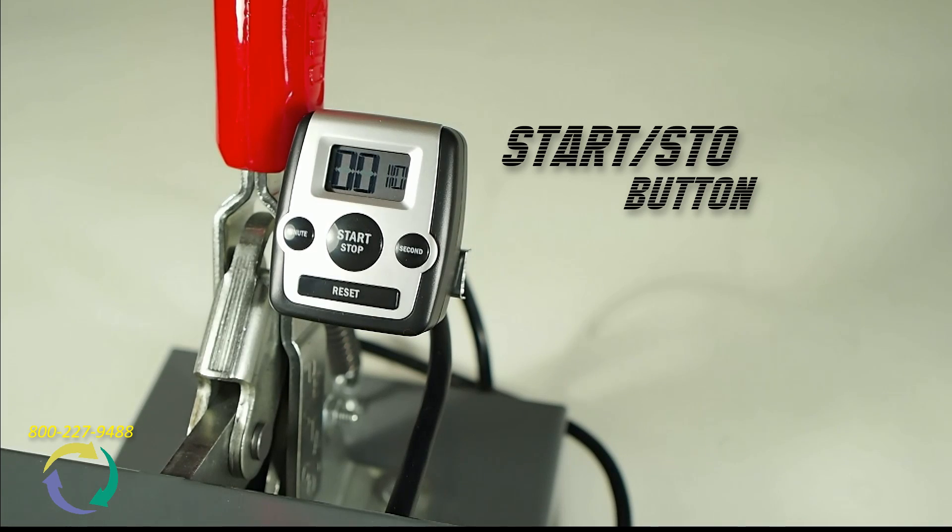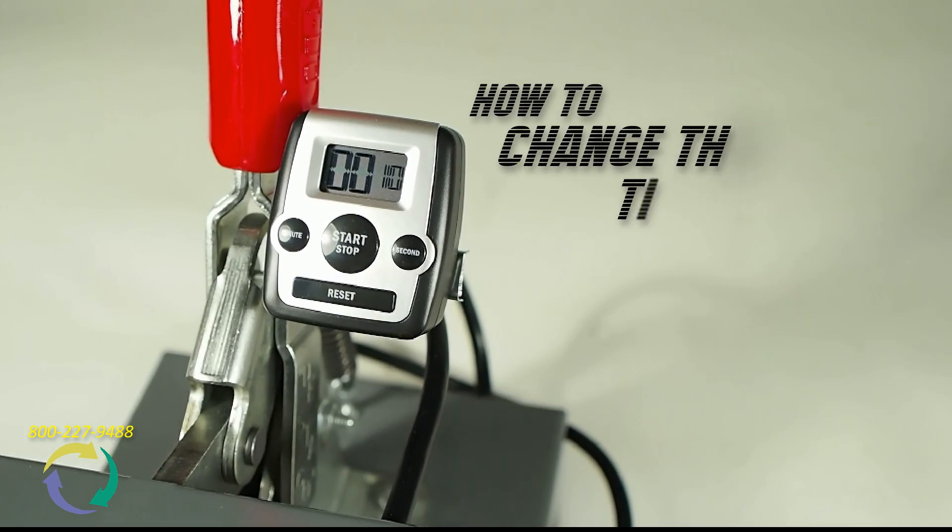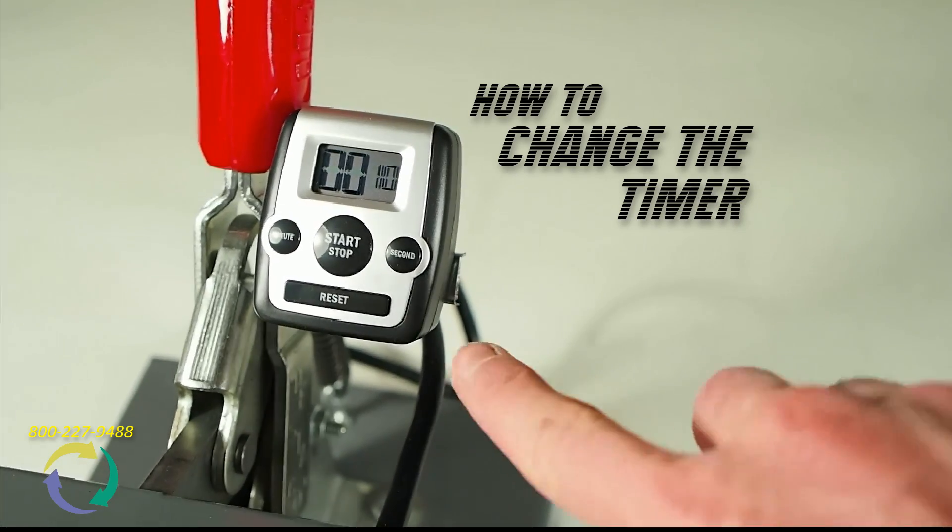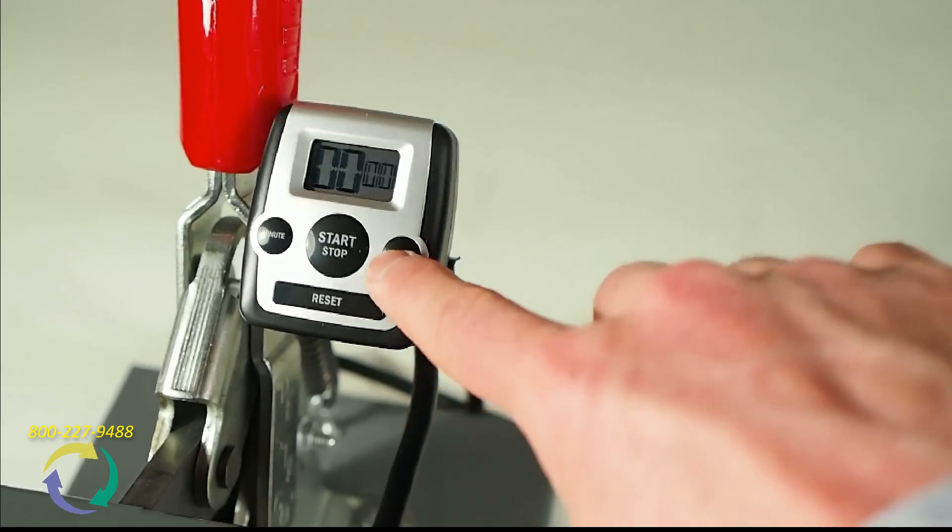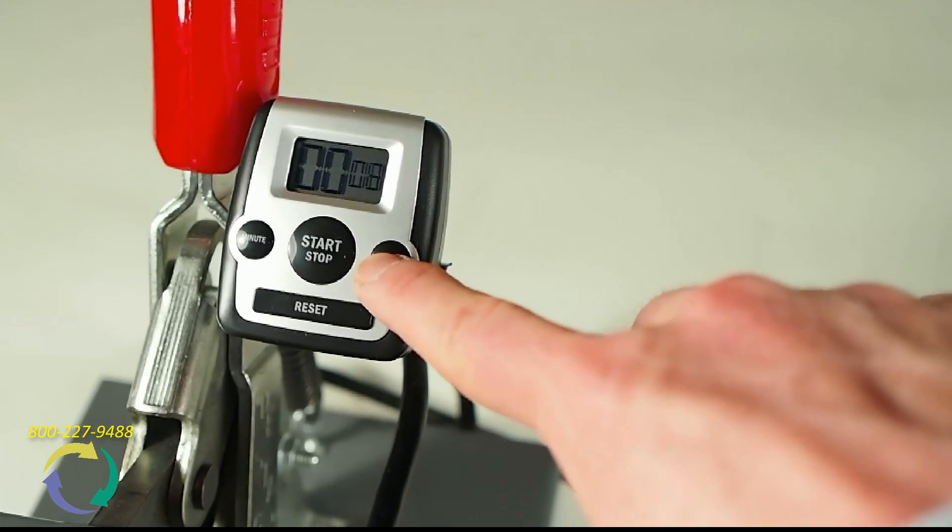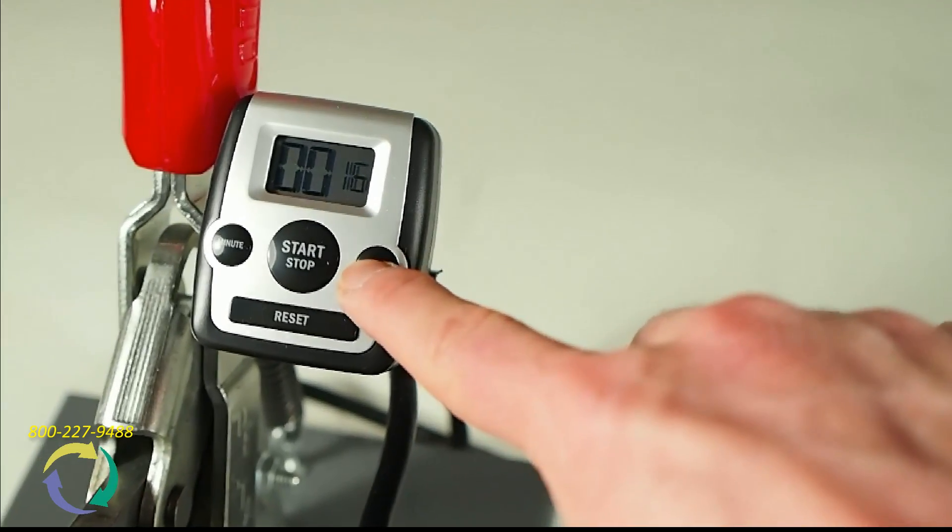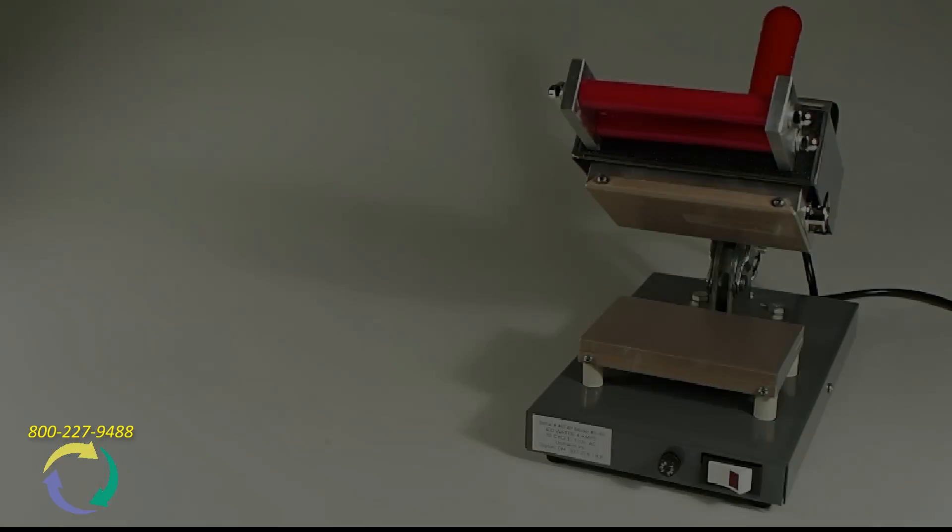Now let's apply a garment repair patch. All you need to do is change the digital timer. Simply press the reset button. Then press the second button until you reach 18. 18 seconds is a suitable time to apply one of our shirt weight garment repair patches.